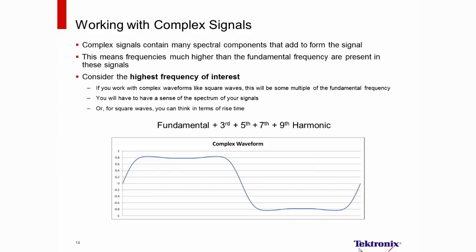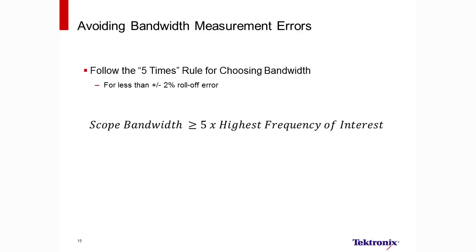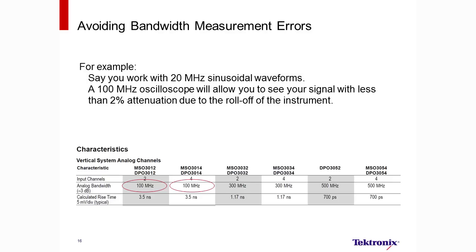So, in general, a higher bandwidth will provide a more accurate reproduction of the signal of interest. Remember when I showed the roll-off curve of a typical scope? I said that the response was pretty flat until we hit one-fifth of the bandwidth. While the actual roll-off of a scope can vary from scope design to scope design, this one-fifth relationship is a good rule of thumb. So, to determine the oscilloscope bandwidth you need to accurately characterize signal amplitude, follow the five times rule. If you choose your scope to have five times the bandwidth of your signals, you should expect less than two percent error due to roll-off. For example, if you're working with 20 megahertz sinusoids, you'll want to choose a 100 megahertz scope to get accurate amplitudes.